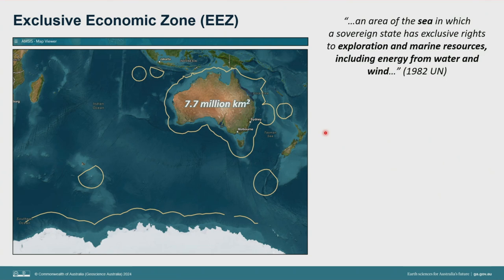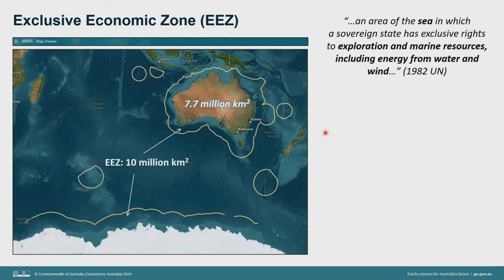Australia has a vast marine estate. Our exclusive economic zone is the third largest of any country in the world. The United Nations defined the EEZ in 1982 as an area of sea in which a sovereign state has exclusive rights to exploration and marine resources — and with much foresight they explicitly included energy from wind and water. Comparing our 7.7 million kilometres of terrestrial landscape to the 10 million square kilometres in our EEZ, this area is about the same extent as mainland Canada.